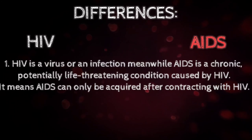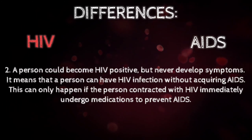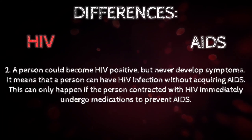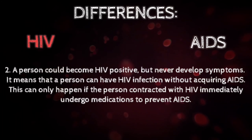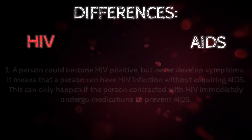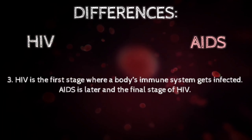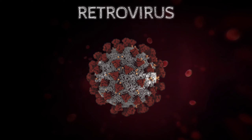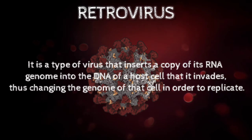However, they are different in many ways. First, HIV is a virus or an infection, while AIDS is a chronic, potentially life-threatening condition caused by HIV — meaning AIDS can only be acquired after contracting HIV. Second, a person could become HIV positive but never develop AIDS, which can happen if the person who contracted HIV immediately undergoes medication to prevent AIDS.